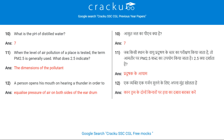When the level of air pollution of a place is tested, the term PM 2.5 is generally used. What does 2.5 indicate? The dimensions of the pollutant.